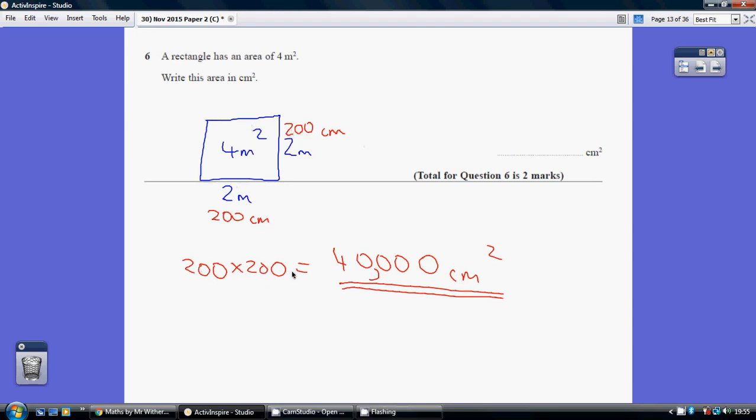Well 200 times 200, 2 twos of 4, 1, 2, 3, 4 noughts giving us 40,000 centimetres squared.